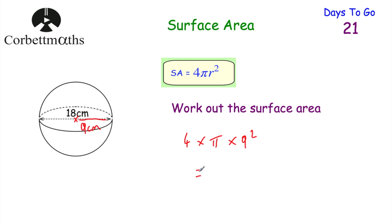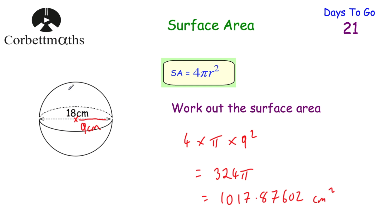For a non-calculator question, 9 squared is 81, multiply by 4 to get 324π. For a calculator question, type in 4 × π × 9² = 324π or 1017.8760 centimetres squared. That's the surface area of the sphere. If it's a non-calculator question, 9 squared is 81, times 4 is 324, then put the π after it, and centimetres squared as the units.